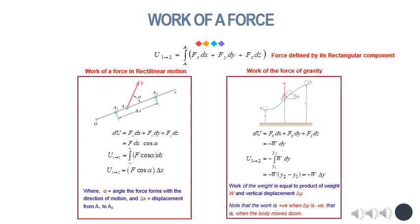We can also obtain the work of the weight W of a body — that is, the force of gravity exerted on that body — by substituting the components of W into the rectangular component formula. This gives dU equals negative W dy, or U1 to 2 equals negative W multiplied by (y2 minus y1). The work of the weight equals the product of weight W and vertical displacement delta y. Note that the work is positive when delta y is negative, that is, when the body moves down.